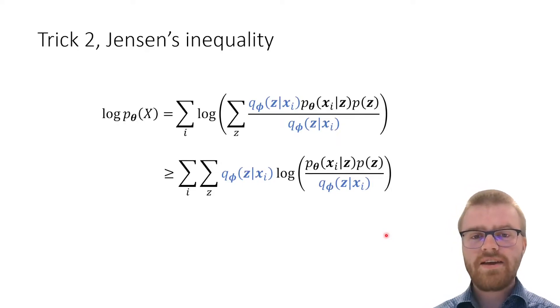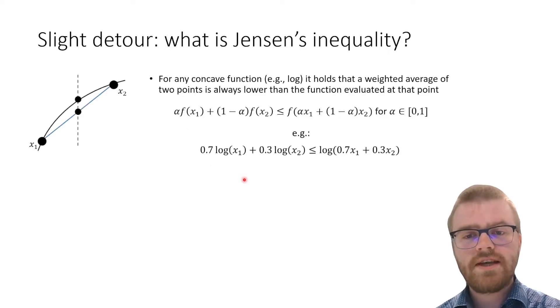The second trick which we're going to introduce is Jensen's inequality. Jensen's inequality is going to allow us to move this summation and one of these blue terms, one of the encoder terms, outside of the logarithm. So let's have a slight detour. What is Jensen's inequality?